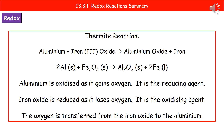Now, just for a little bit of complexity, aluminium is actually called the reducing agent. If we look at our iron oxide, we start off with iron joined with oxygen as our reactant, and then in our product we just have iron on its own. So the iron oxide has been reduced because it's lost oxygen. An oxidising agent is one that gives up the oxygen and gives it to something else, whereas a reducing agent is the one that receives the oxygen. Oxygen is being transferred from the iron oxide to the aluminium.